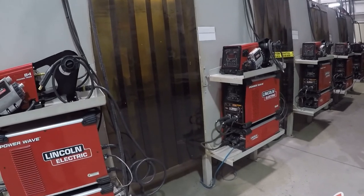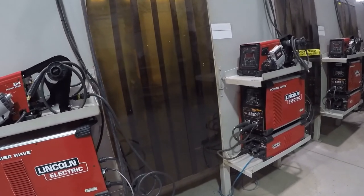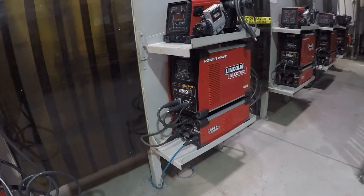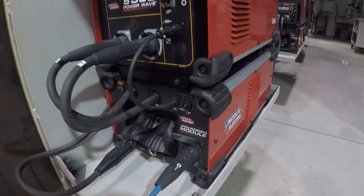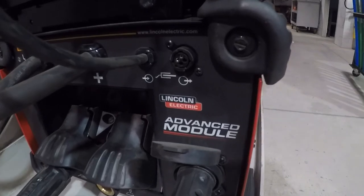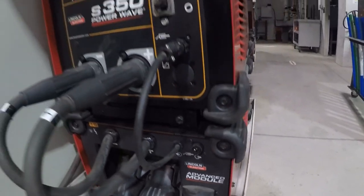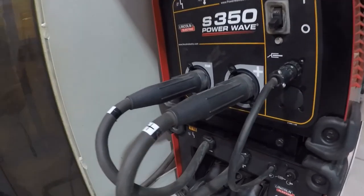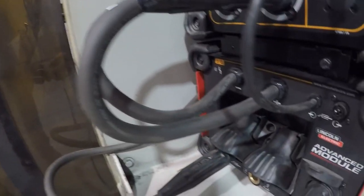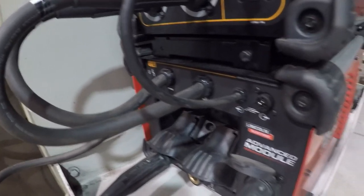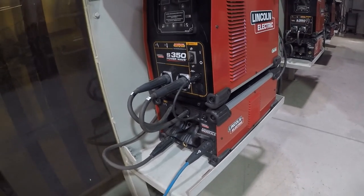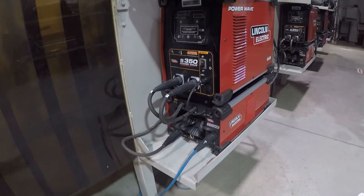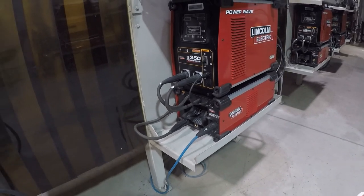To do all processes with these Lincoln machines, we have to have this advanced module down below here that plugs into this power source through these cables. 20 of our Lincoln machines have this advanced module and that's for TIG welding with AC for aluminum.